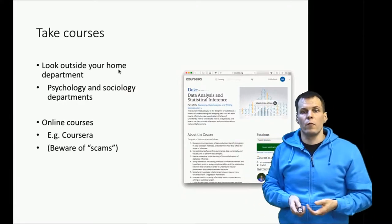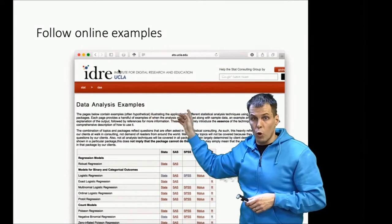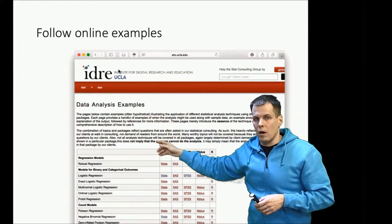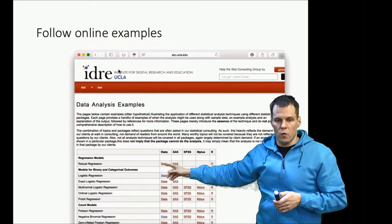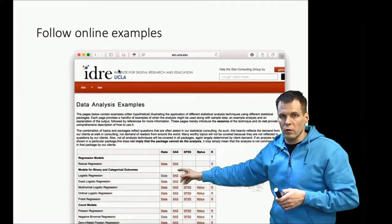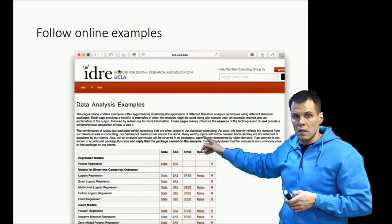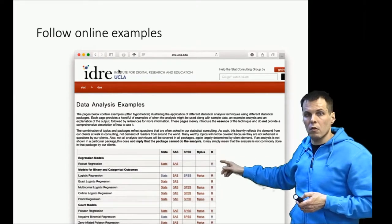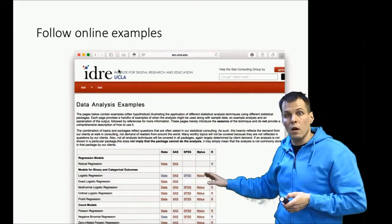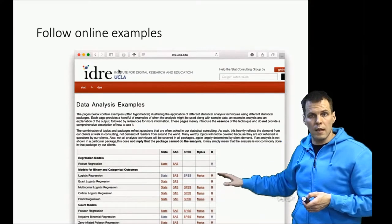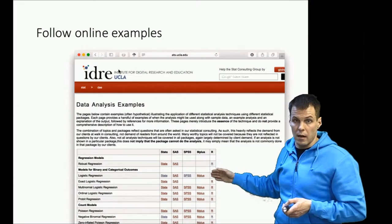Another nice way of learning is doing examples online. The University of California Los Angeles statistics department has data analysis examples on their website. They have a list of different statistical analyses you could apply to data, with separate web pages for different statistical software including Stata, SAS, SPSS, M-plus — a specialized package for structural regression modeling — and R. You can compare how a particular analysis would be executed across these five software packages, and the website also tells you how to interpret the results. They have lots of examples from textbooks.